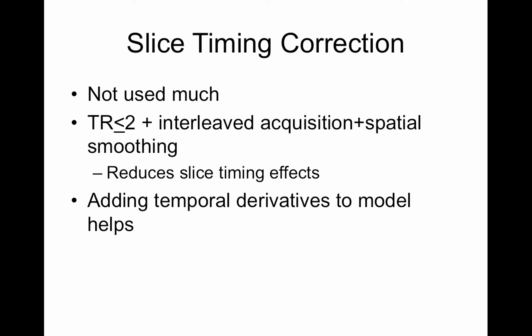In my experience, slice timing correction hasn't been used much. If your TR is less than two seconds, if you have an interleaved acquisition, and if you spatially smooth your data — all of these things reduce the slice timing effects. It kind of comes out in the wash. A group I know who accidentally had the wrong slice timing parameters — when they fixed it, none of their results changed, which makes you wonder if it was doing anything. Adding temporal derivatives also helps with these issues where things are off by something less than a TR.